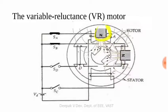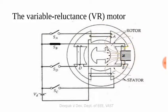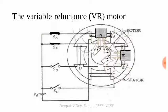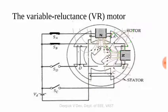When coil A and coil B are excited simultaneously, the resultant magnetic field is at an angle between them. This resultant angle positions the rotor at an intermediate step, effectively giving a smaller step angle of 45 degrees instead of 90 degrees.